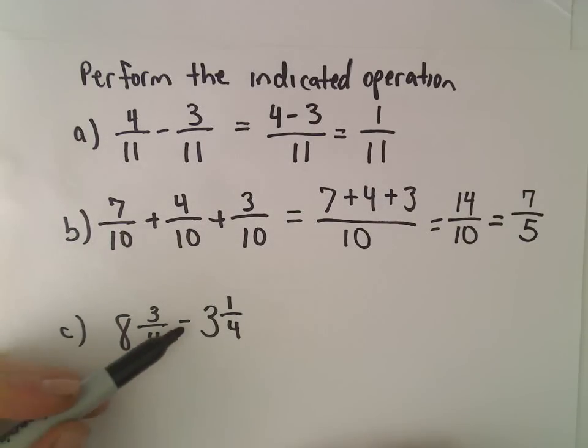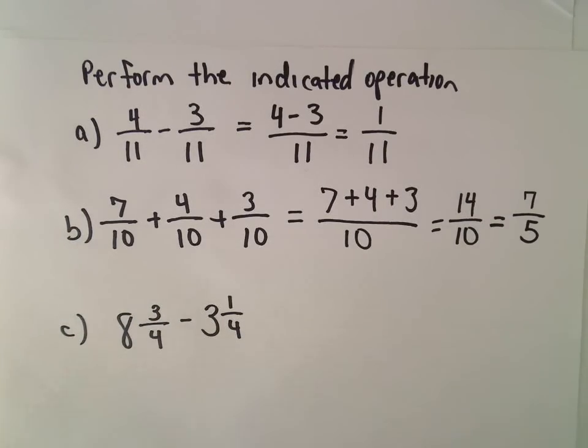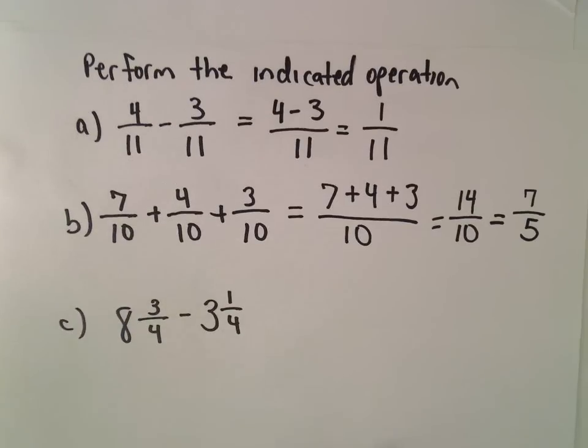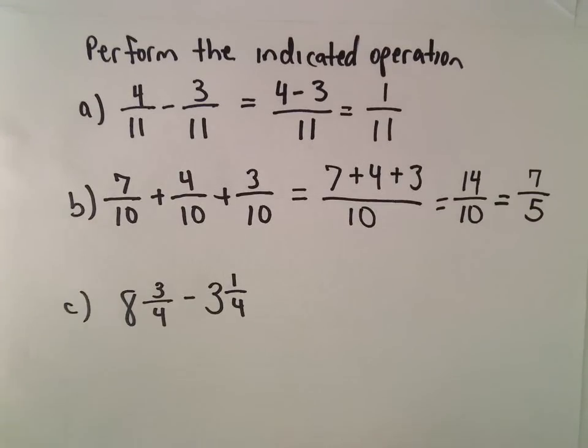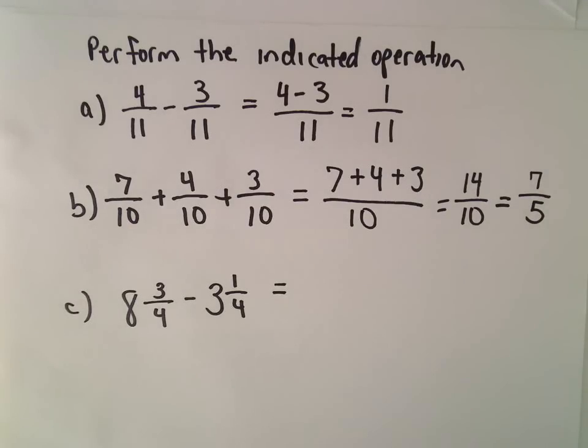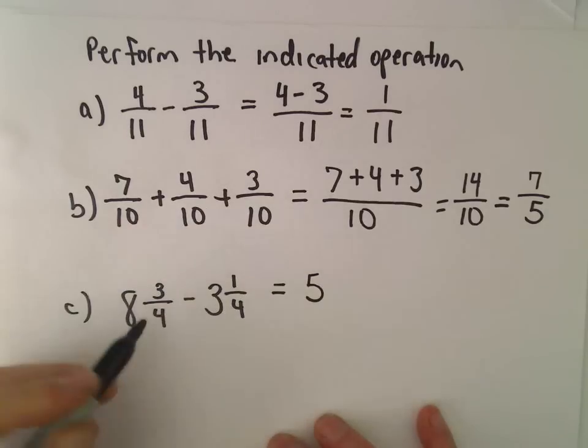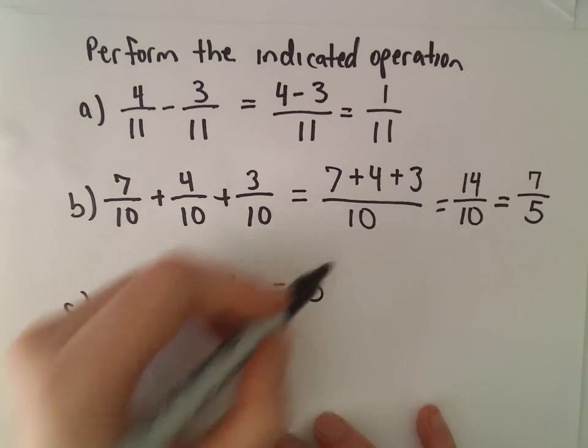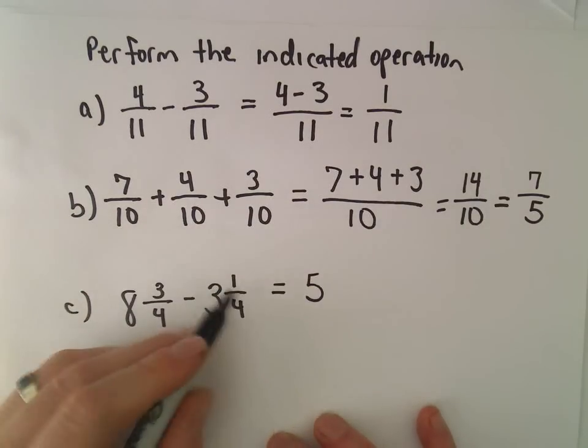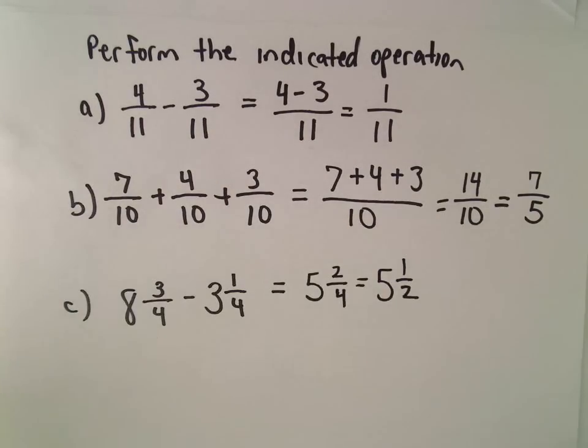Here we have 8 3/4 - 3 1/4. Different ways you can do this. You could just subtract the whole numbers and subtract the fractions. We could just do 8 minus 3, which would be 5, and 3/4 minus 1/4, that would be 3 minus 1 or 2/4. So that would be one way to do it.